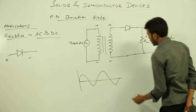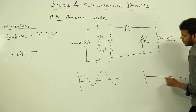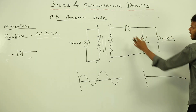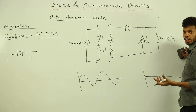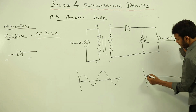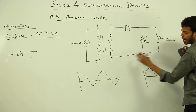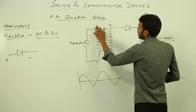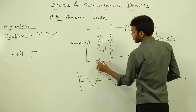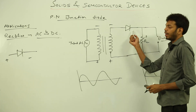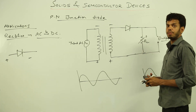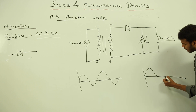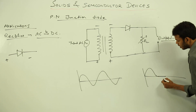During the positive half cycle, the diode is in a forward bias state, which means current is going to flow through it — it will allow current to pass easily, and you will get a similar output. But during the negative half cycle, the diode is going to be in a reverse bias state, meaning it will not allow current to flow through it, so we are not going to get any output.